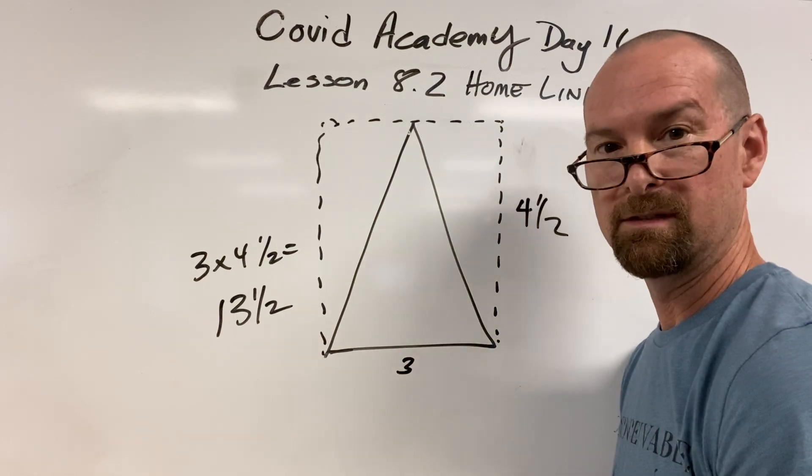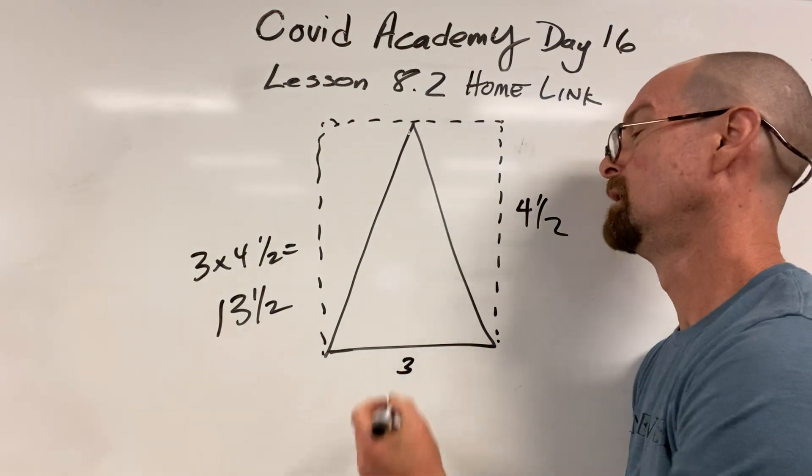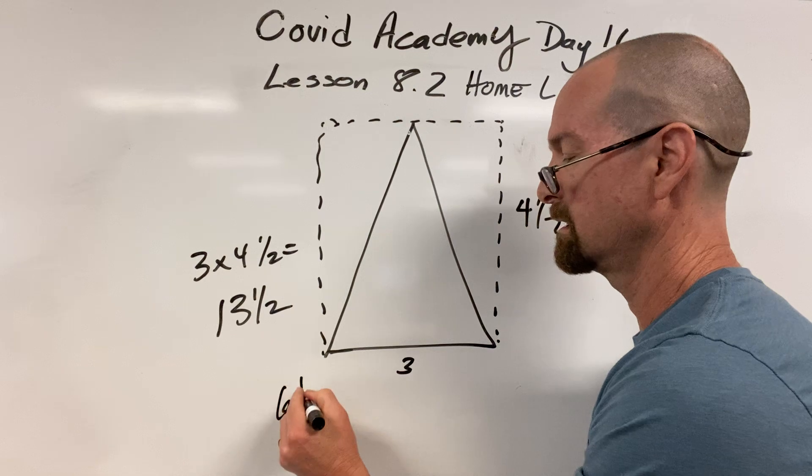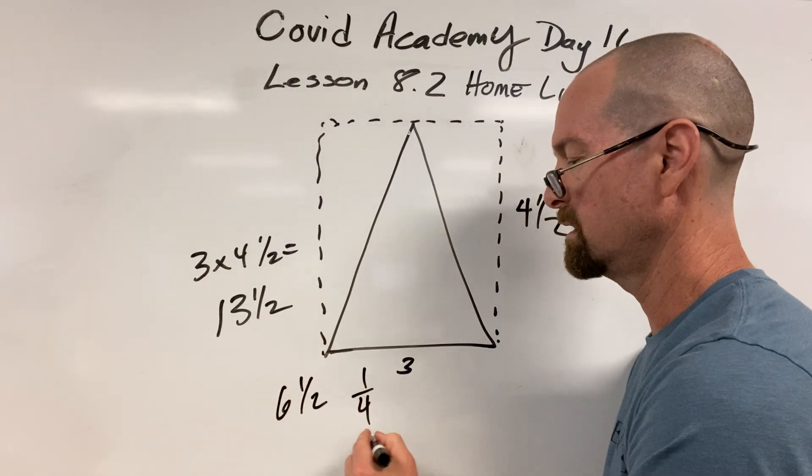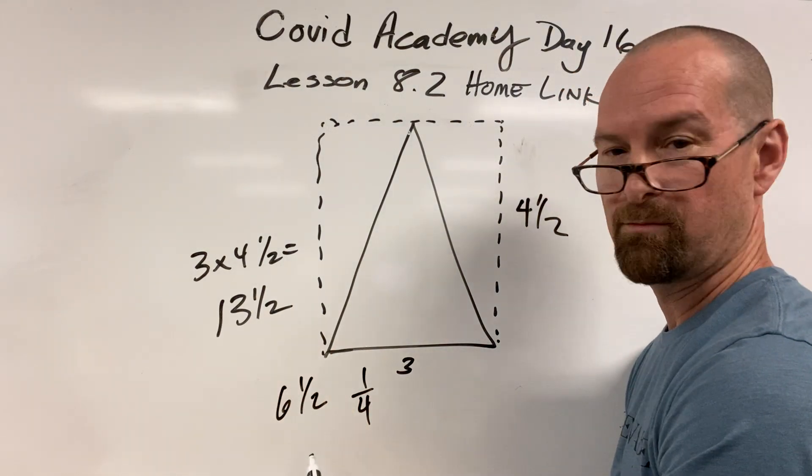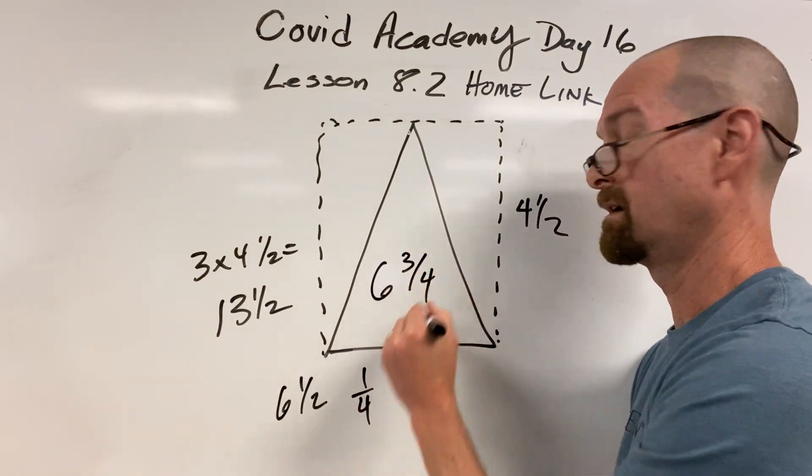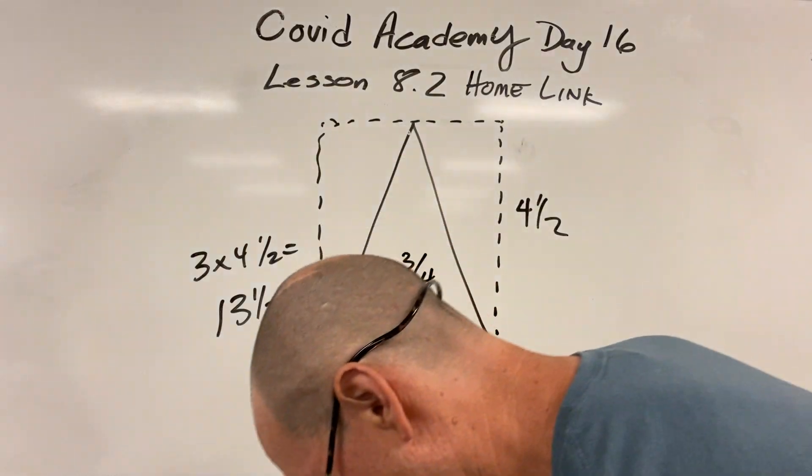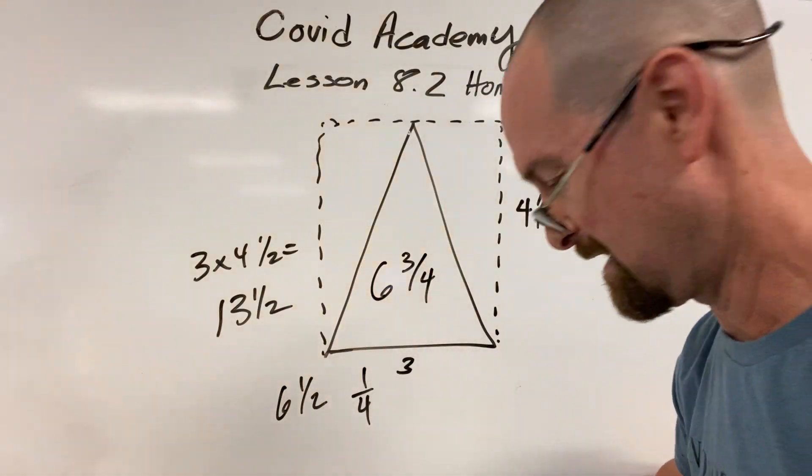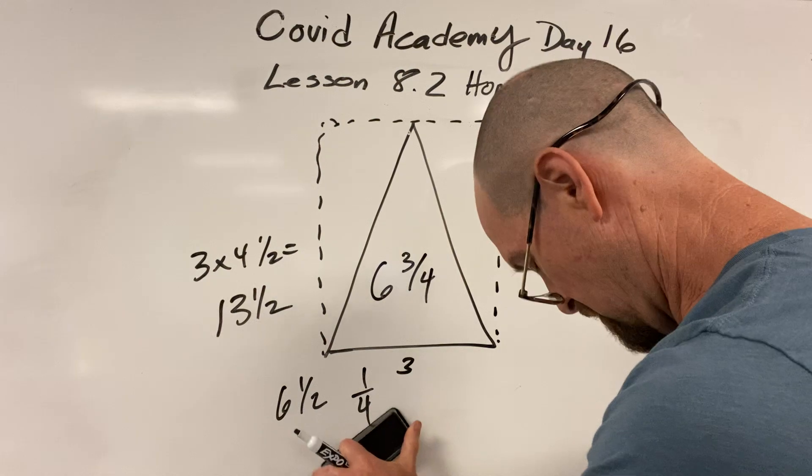All right. The whole thing is 13 and a half. I need half of 13 and a half. Half of 13 is 6 and a half. Half of a half is a fourth. Put them together, and you get 6 and a half plus a fourth. That's 6 and 3 fourths. All right. That one I'm going to check the book and see if I got it right. Oh, it's right in my hand. Yes, I got it right. Confidence.